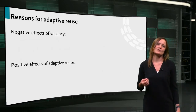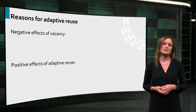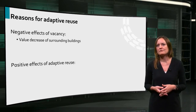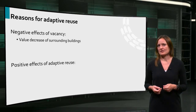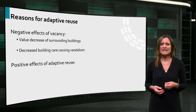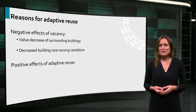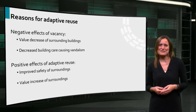Social cohesion and societal development is another reason to adaptively reuse buildings. Vacant buildings have a negative influence on the value of buildings in the surroundings, and vacant buildings are typically less well maintained and safeguarded, with graffiti and vandalism as steady companions. Neighbours of vacant buildings are normally very positive to vacant buildings being adaptively reused, as it improves safety and value of the surroundings.